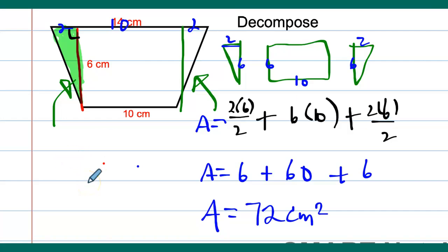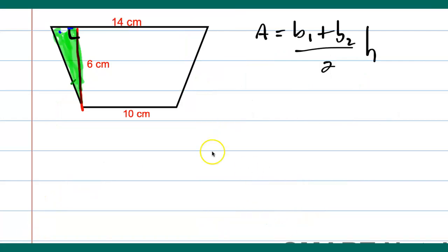So now you have an option which one you want to do. Let's do it the regular way using the formula. All right, so in this case we're going to be using the formula to solve this problem. So let's substitute the values. So we're going to have 14 plus 10, and then we divide it by two and multiply it by six. Let's solve it.